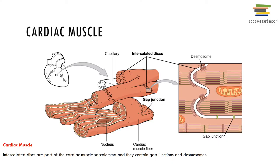Cardiac muscle was introduced at the beginning of this chapter, and you will learn more about it when you study the cardiovascular system in A&P 2. One thing to note about cardiac muscle, which is identified histologically, are intercalated discs. They are part of the cardiac muscle sarcolemma and contain gap junctions and desmosomes, which allow cardiac muscle to work as a unit.